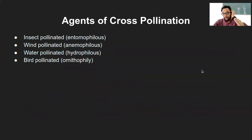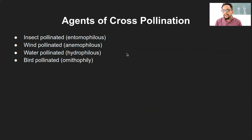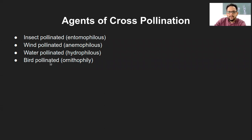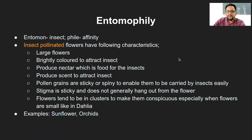Moving on to the agents of cross-pollination — there are four major types in the syllabus: insect-pollinated, wind-pollinated, water-pollinated, and bird-pollinated. There are several other types as well but these four will be the focus.